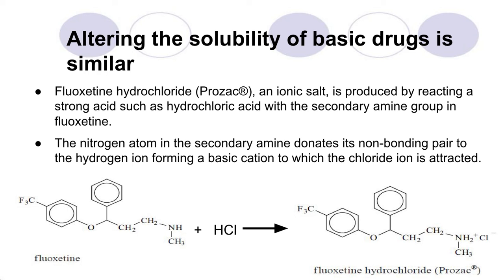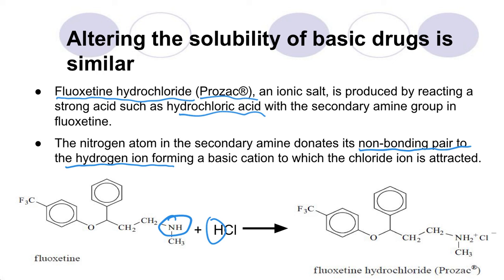This happens with a lot of drugs. Many drugs when they're made are not very soluble in water, so to make them more soluble you react them with a strong base — as we saw with aspirin — or with a strong acid. For example, Prozac (fluoxetine) is reacted with hydrochloric acid. The secondary amine group's nitrogen donates its non-bonding pair to the hydrogen ion, forming an NH⁺ Cl⁻ salt, which is much more soluble than the secondary amine form.